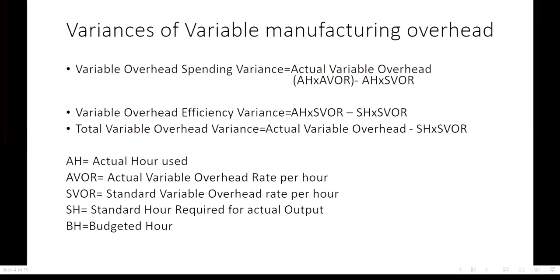To memorize the formula, remember: actual variable overhead minus standard hour into standard variable overhead rate equals the total variable overhead variance. This is then split into spending variance and efficiency variance, with 'actual hour into standard variable overhead rate' serving as the linking middle term between the two formulas.